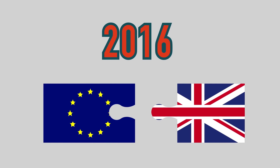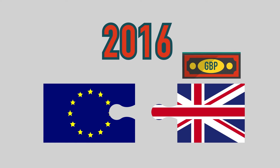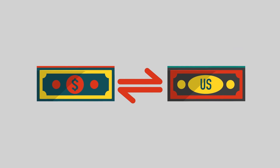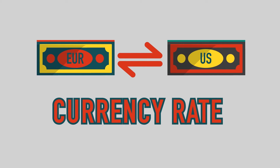The 2016 British referendum resulted in Brexit. The British pound has depreciated against all major currencies, making buying watches and bags in the UK much cheaper. In general, most currencies are priced against USD. For example, Euro to USD — that is called regular currency pairing.